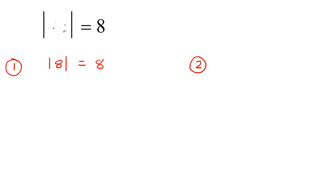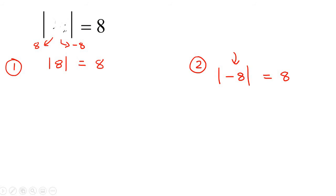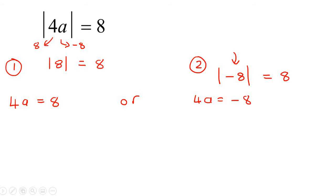In the second scenario, you could also put minus 8 — because the absolute value of minus 8 also gives us 8. So whatever you put inside could either be 8 or minus 8, because when you take the absolute value, it gives you 8. That means if we have 4a inside, 4a is allowed to equal 8, or 4a is also allowed to equal minus 8. This is the fundamental part of absolute value equations — and now it's easy.